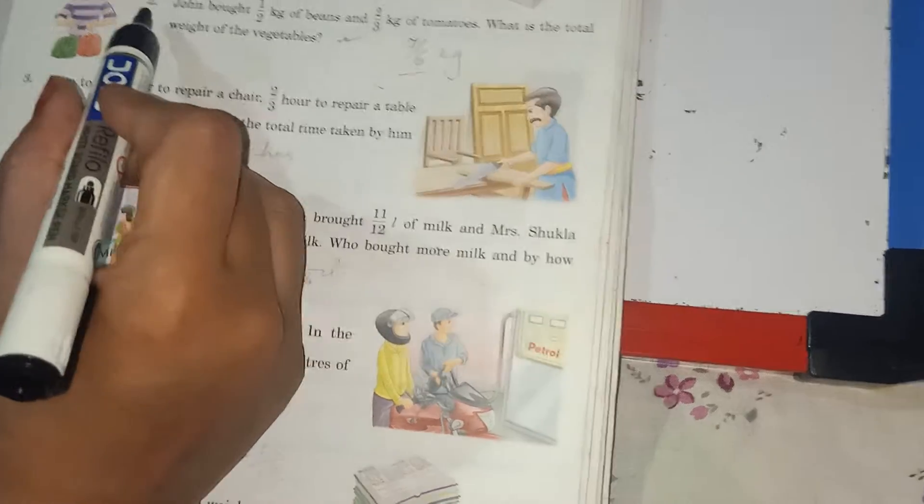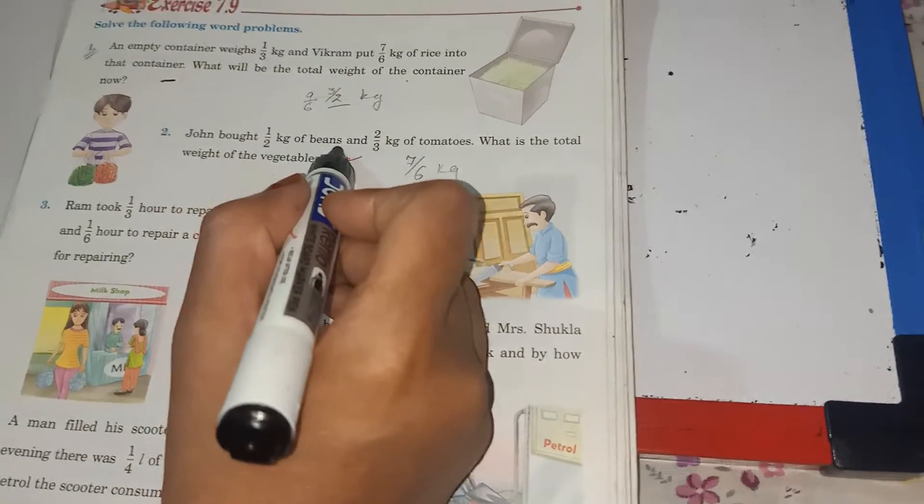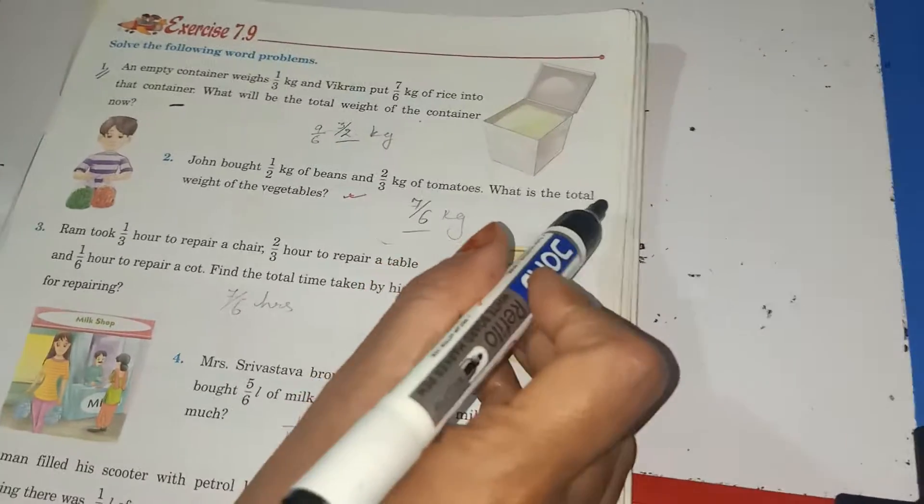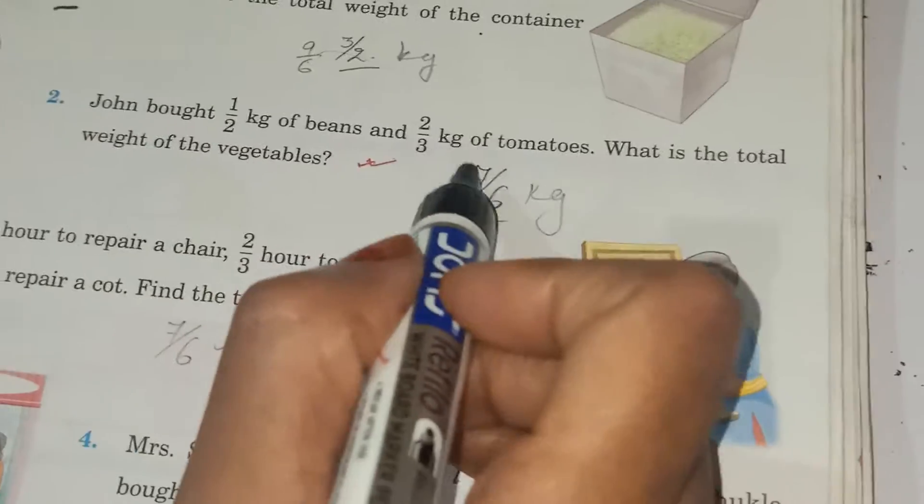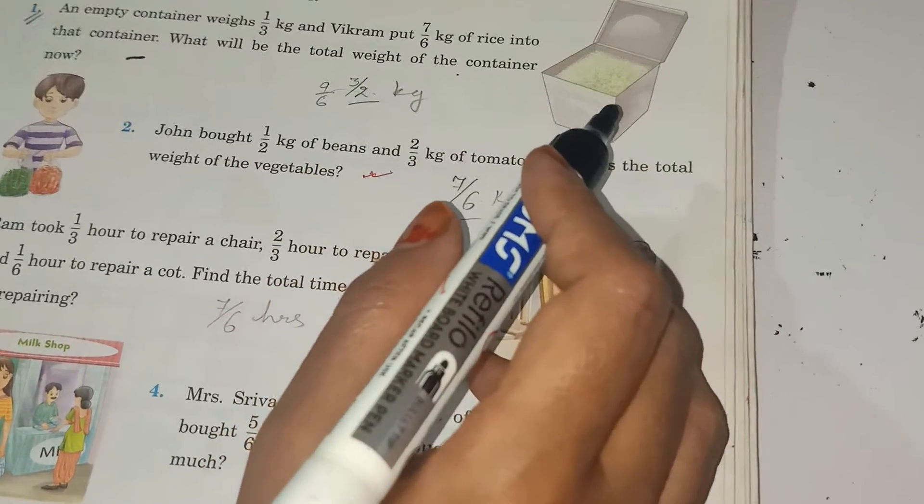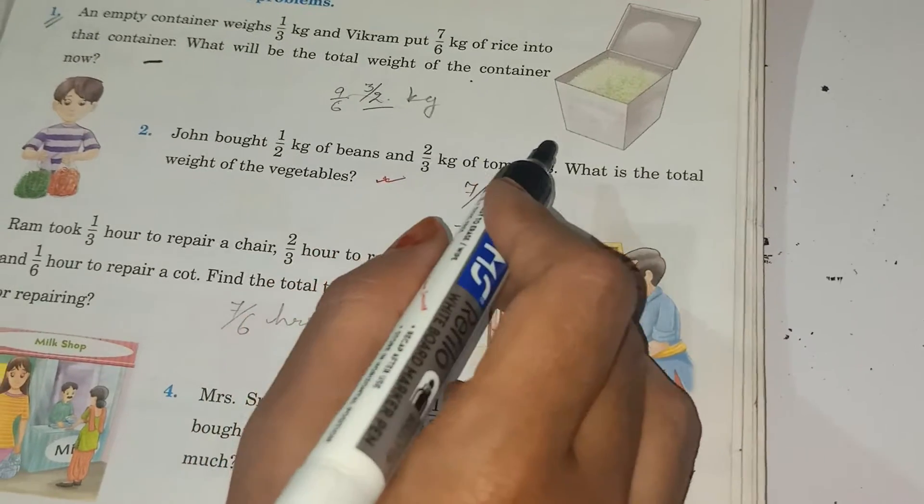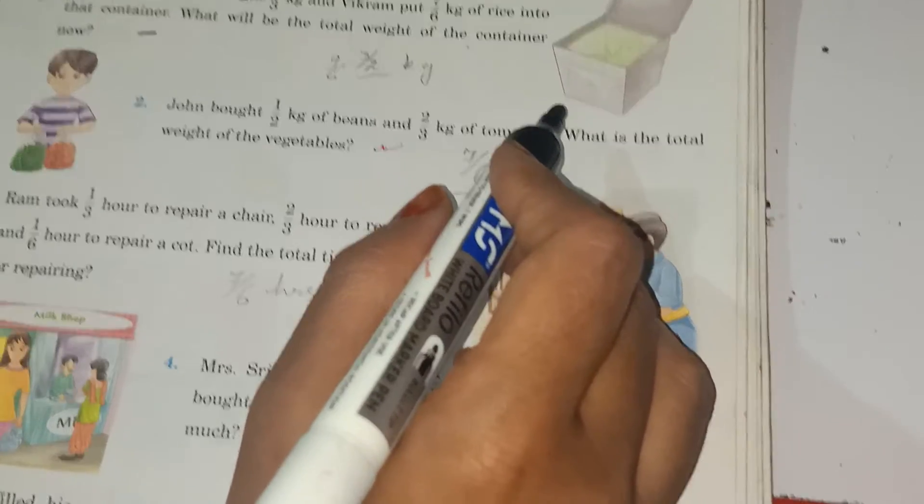Look carefully, question number 2, John bought 1 by 2 kg of beans and 2 by 3 kg of tomatoes. What is the total weight of vegetables? It is the same as question number 1, you can do. And first thing, in word problem you have to write this statement properly.